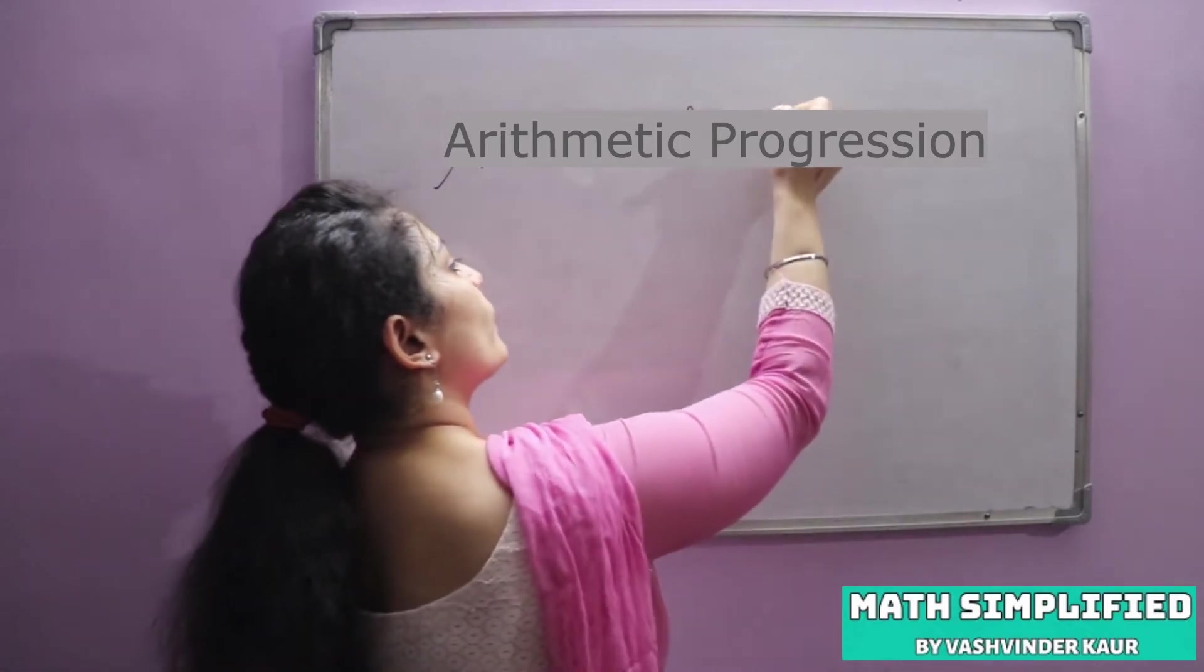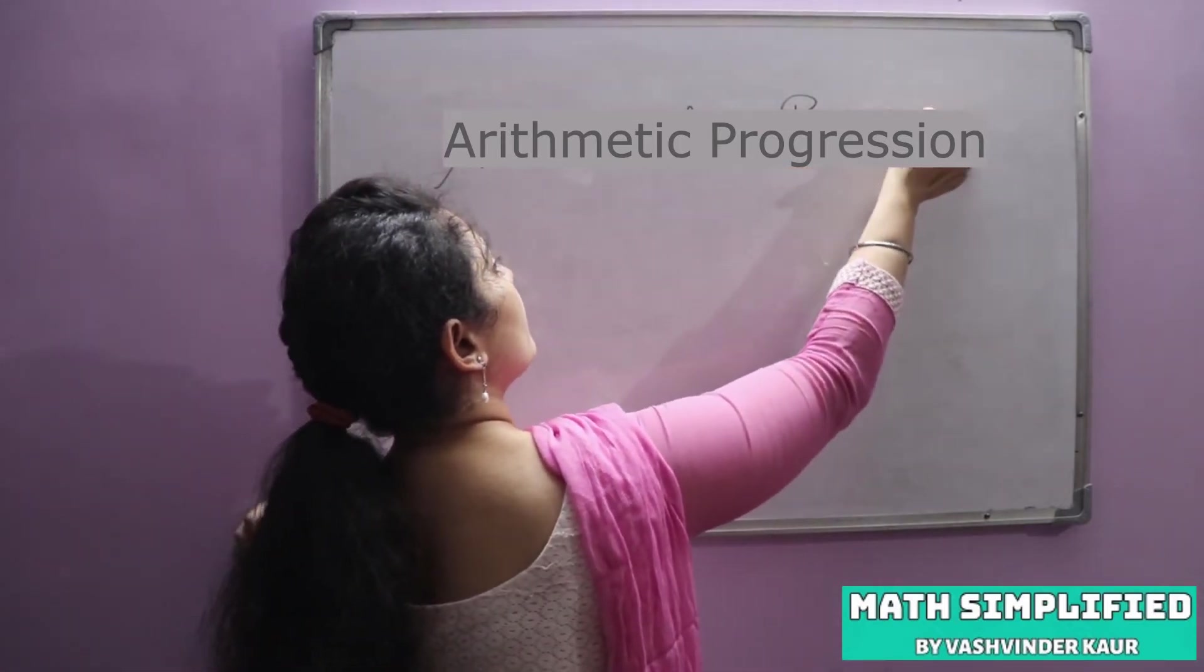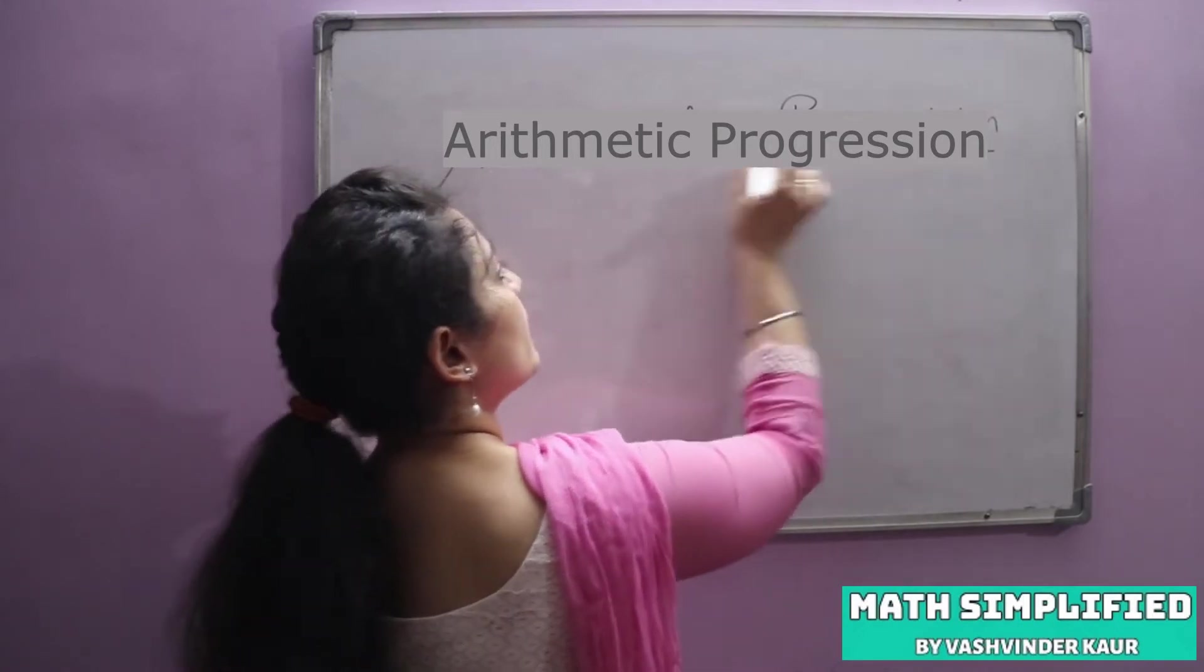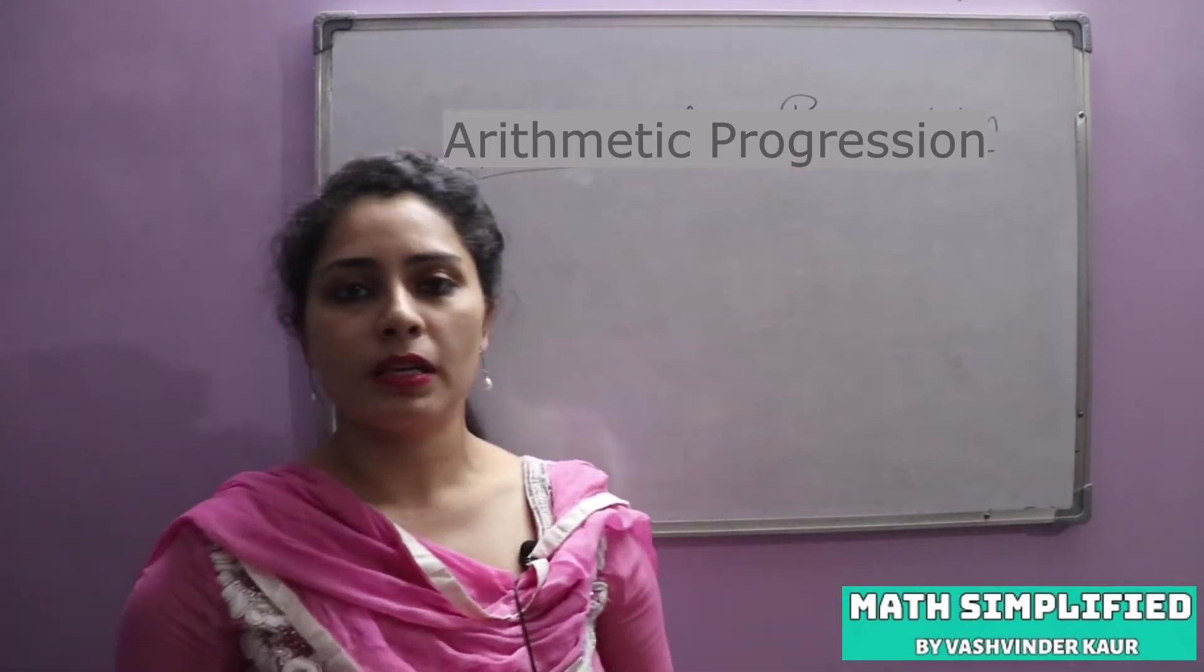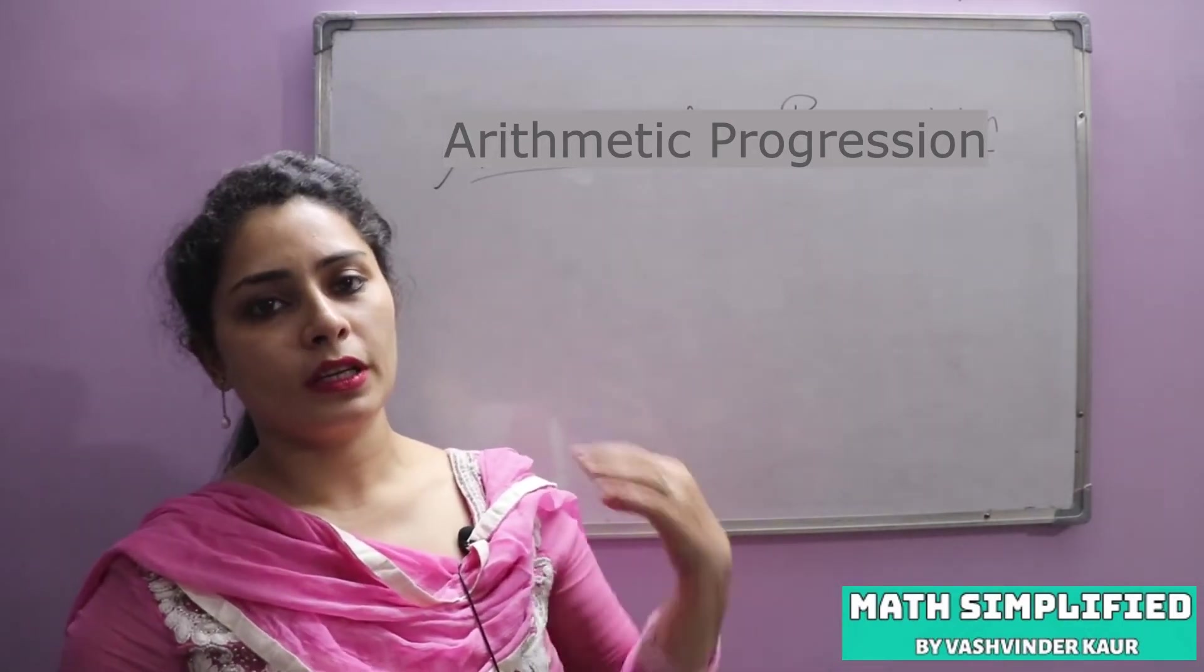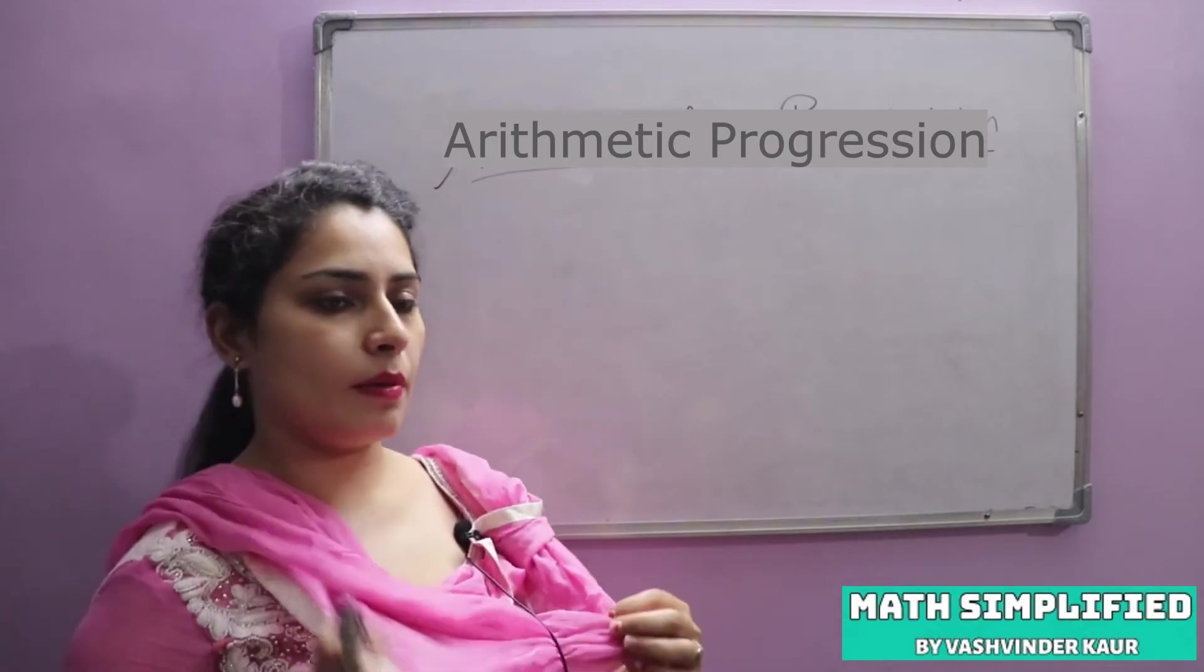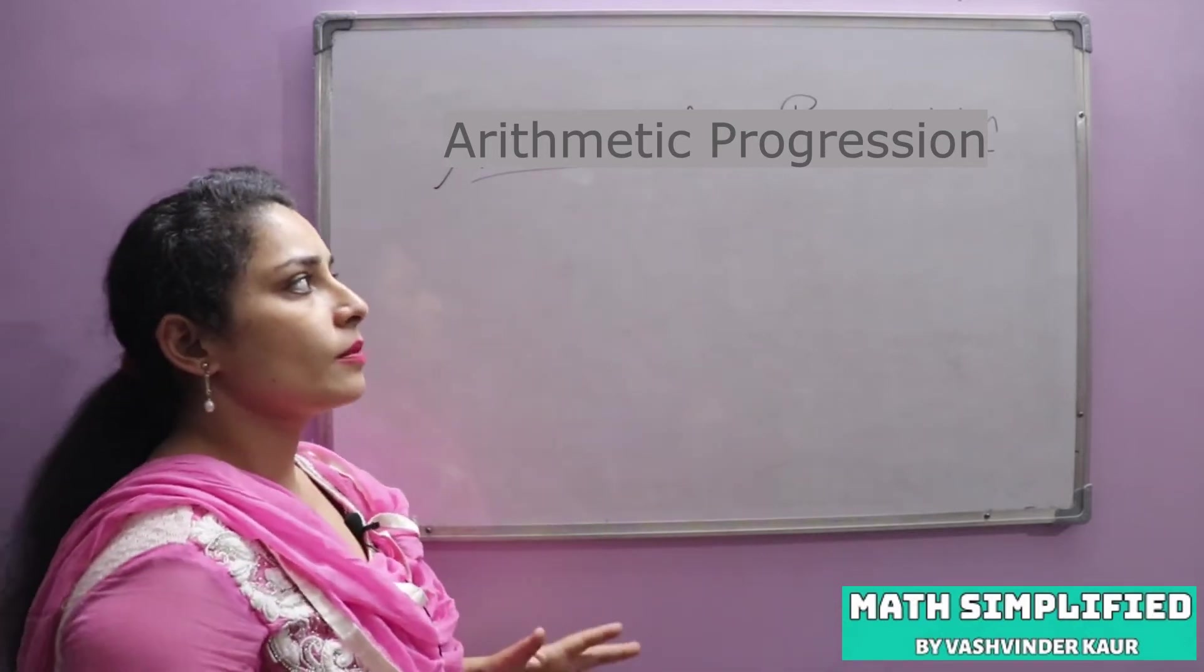It's a very simple chapter. Total algebra unit has 10 marks in which we have two chapters: arithmetic progression and quadratic equation. So 5 marks each, 5 marks is AP. And it's very simple.